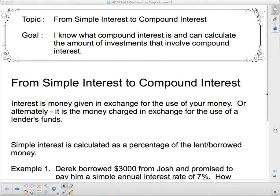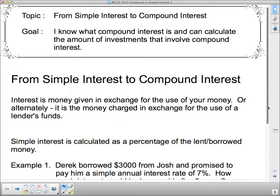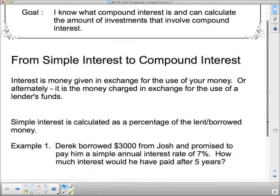So simple interest is calculated as a percentage of the lent or borrowed money. And compound interest is the same although there's a slight twist to it.